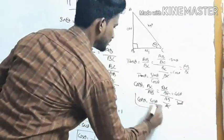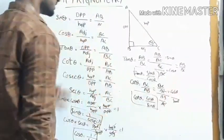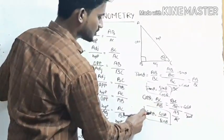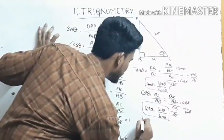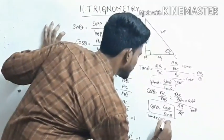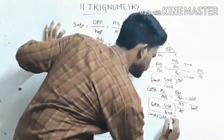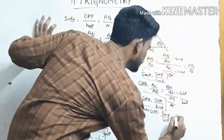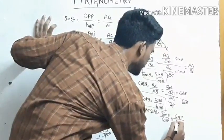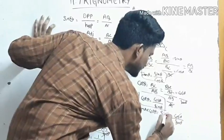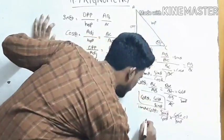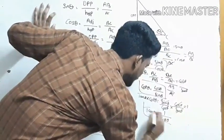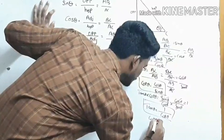Cot theta is cos theta by sin theta, and tan theta equals sin theta by cos theta. Then tan theta into cot theta equals sin theta by cos theta into cos theta by sin theta. Cos and sin both cancel, giving 1. Therefore tan theta equals 1 by cot theta, and cot theta equals 1 by tan theta.